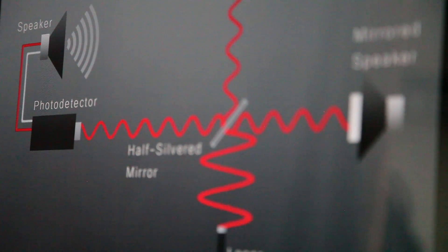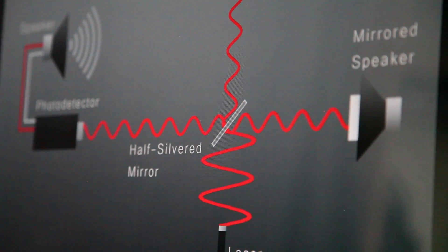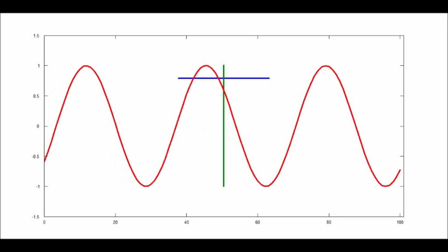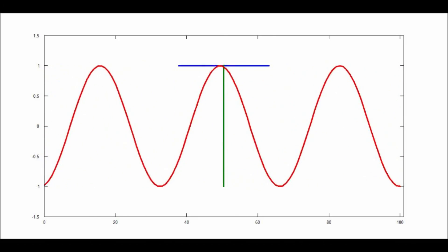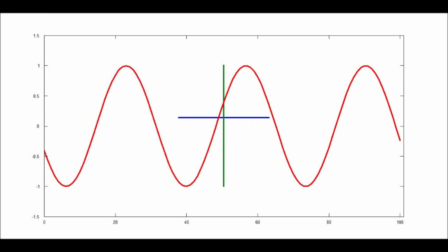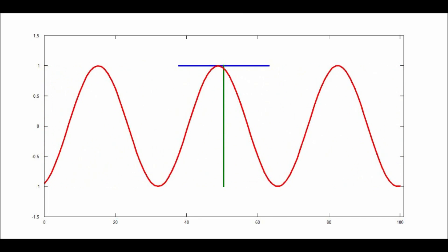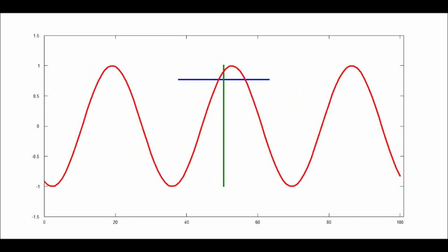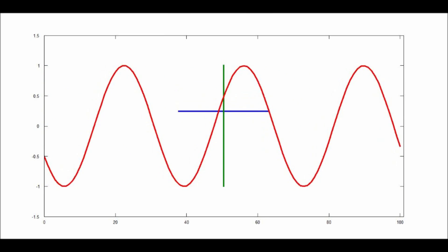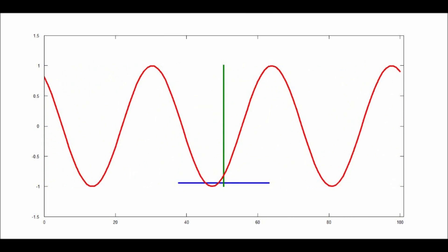Imagine we attach one of our mirrors to a speaker so that it vibrates along the beam's axis. We'll call this our mirrored speaker. In this graphic, the blue line represents the mirrored speaker, and the sine wave represents the signal we're playing through it. Notice the velocity of the mirror is proportional to the slope of the waveform at any given time. This means our mirror's velocity is zero at the peaks and troughs, and maximized at the inflection points. The overtones our photodetector sees are dependent on this interaction.